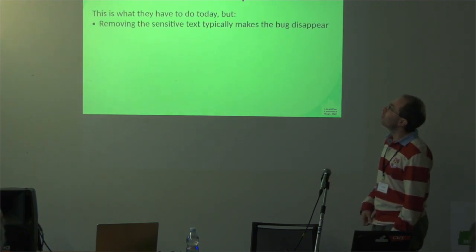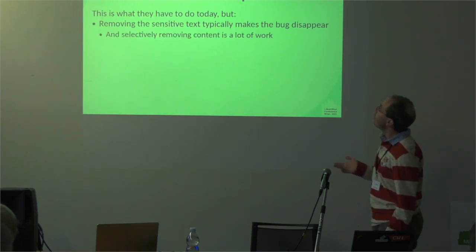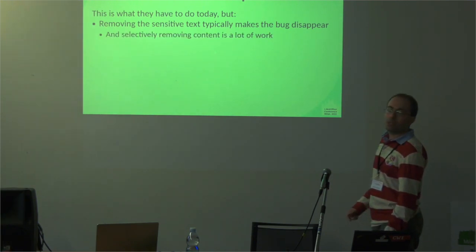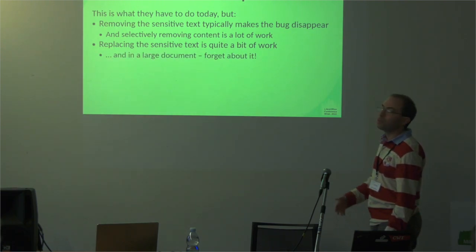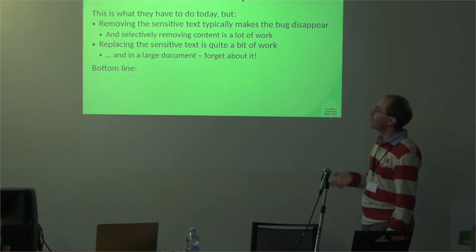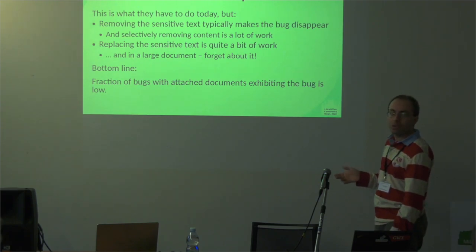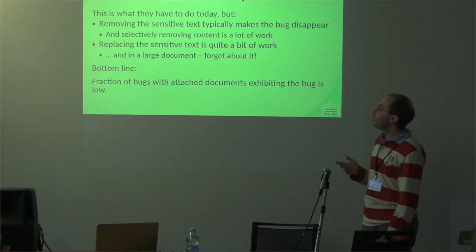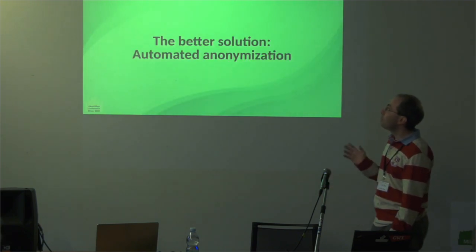So what are we going to do about that? The poor solution is to have the user remove all the private information themselves, which is what they're supposed to do today. But this is actually difficult, because it could make the bug disappear. If they want to remove things selectively, that's hard, and it's a lot of work. If the document is large, just forget about it — that's not gonna happen. Bottom line: the fraction of bugs that have documents attached exhibiting the bug is low.